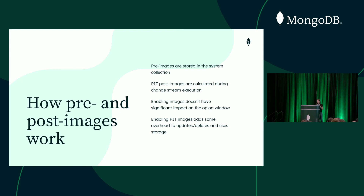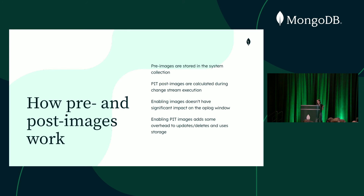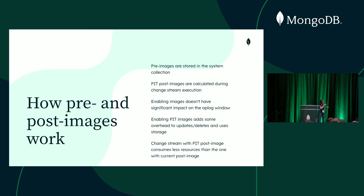Enabling point-in-time images does add some overhead to your writes because we have to write that image in the collection, and it uses storage. However, compared to the old approach of returning the current document version, point-in-time images are actually faster for reading the change stream. The old approach required a lookup into the actual collection using the index. With the new dedicated collection using clustered collections, we can get the document right away.